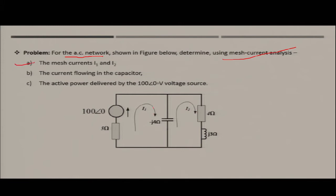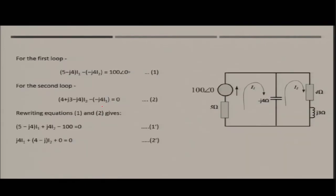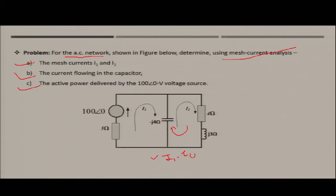For the AC network, we need to determine: the mesh currents i1 and i2, the current flowing in the capacitor (which will be i1 minus i2 since both mesh currents flow through it in opposite directions), and the active power delivered by the voltage source of 100 volts at angle zero.